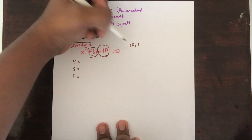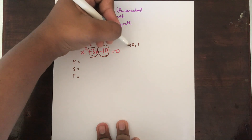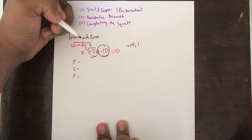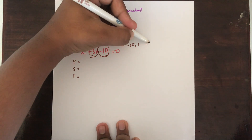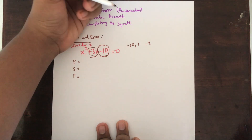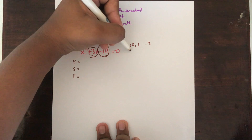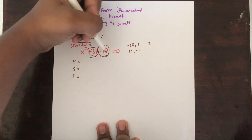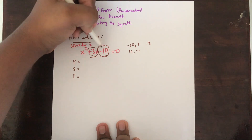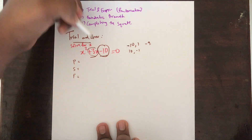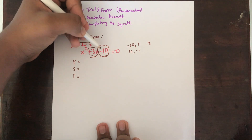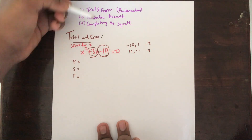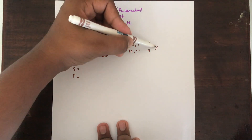So suppose you have minus 10 and 1 — if you multiply them you get minus 10, but if you add them you get minus 9. That doesn't work. Alternatively, you could have 10 and minus 1 — you multiply them and get minus 10, but if you add them you get 9. So none of these work.